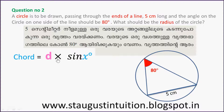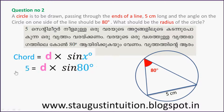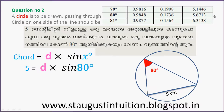This 5 cm is equal to D into sin of x degrees, where x degree is equal to 80 degrees. So putting the values: 5 is equal to D into sin 80. What is sin 80? Sin 80 is equal to 0.9848.